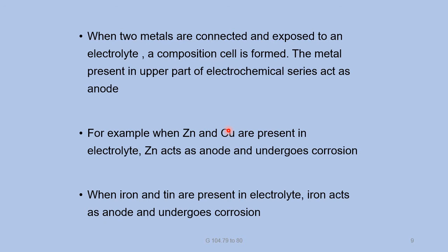Another example: when iron and tin are present in an electrolyte, iron is placed in the upper part of the electrochemical series and acts as anode — it loses its electrons, is destroyed, and undergoes corrosion. Tin is placed in the lower part, so it acts as cathode and is prevented from corrosion. This is the explanation of the composition cell.